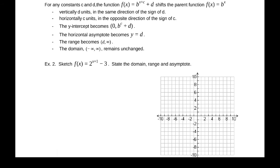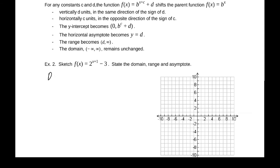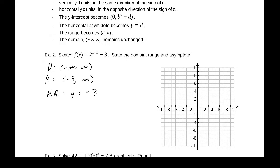So we're going to sketch f(x) = 2^(x+1) - 3. The domain will remain unchanged. This is shifted down three, so our range should be negative three to infinity, with a horizontal asymptote of y = -3. So we'll go ahead and sketch the horizontal asymptote.